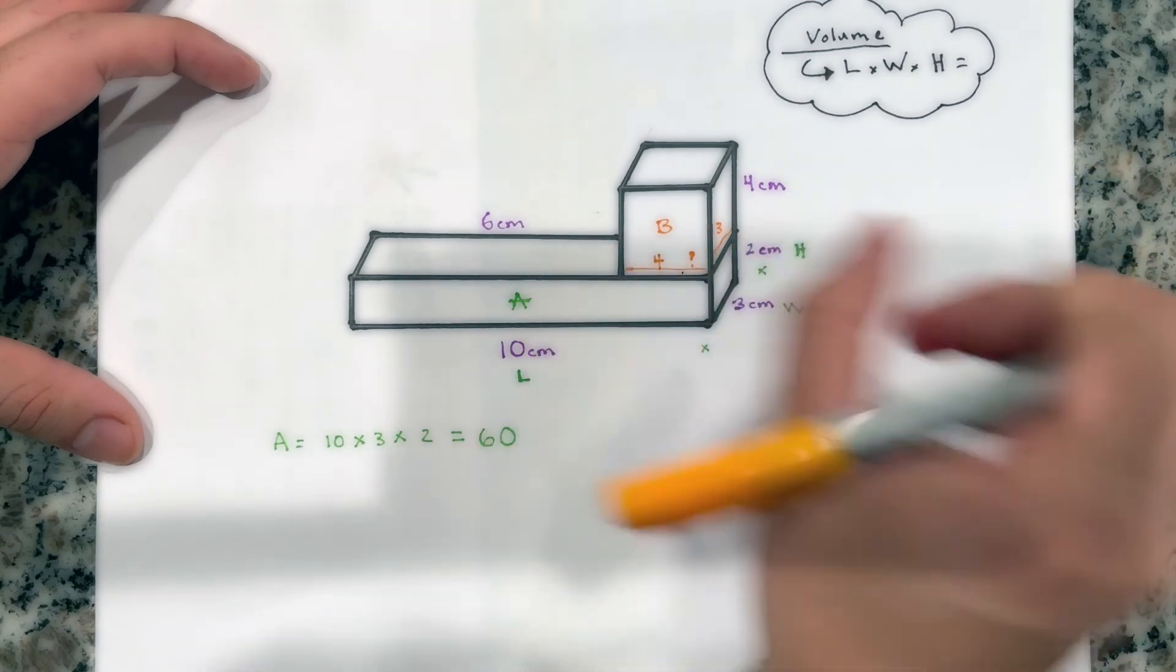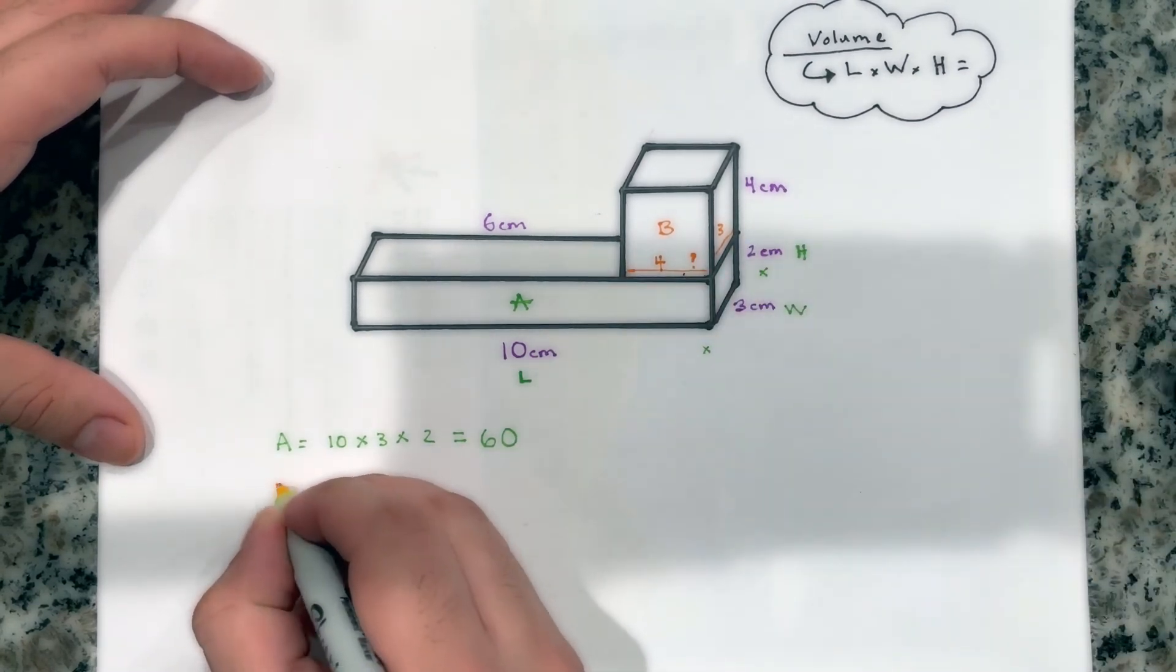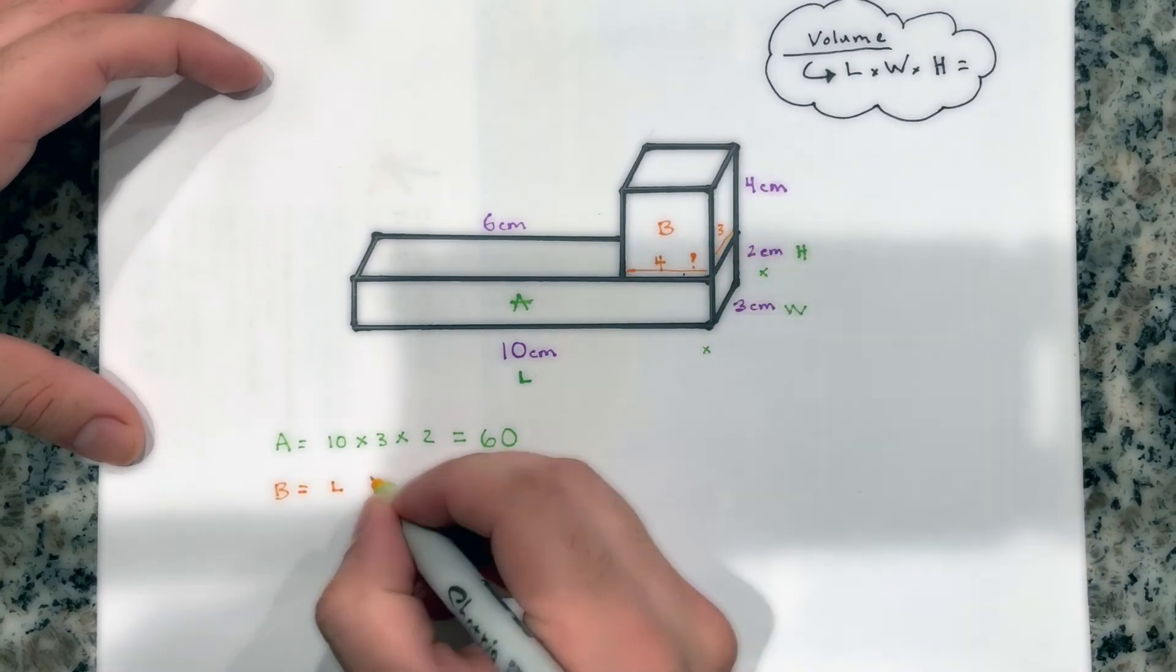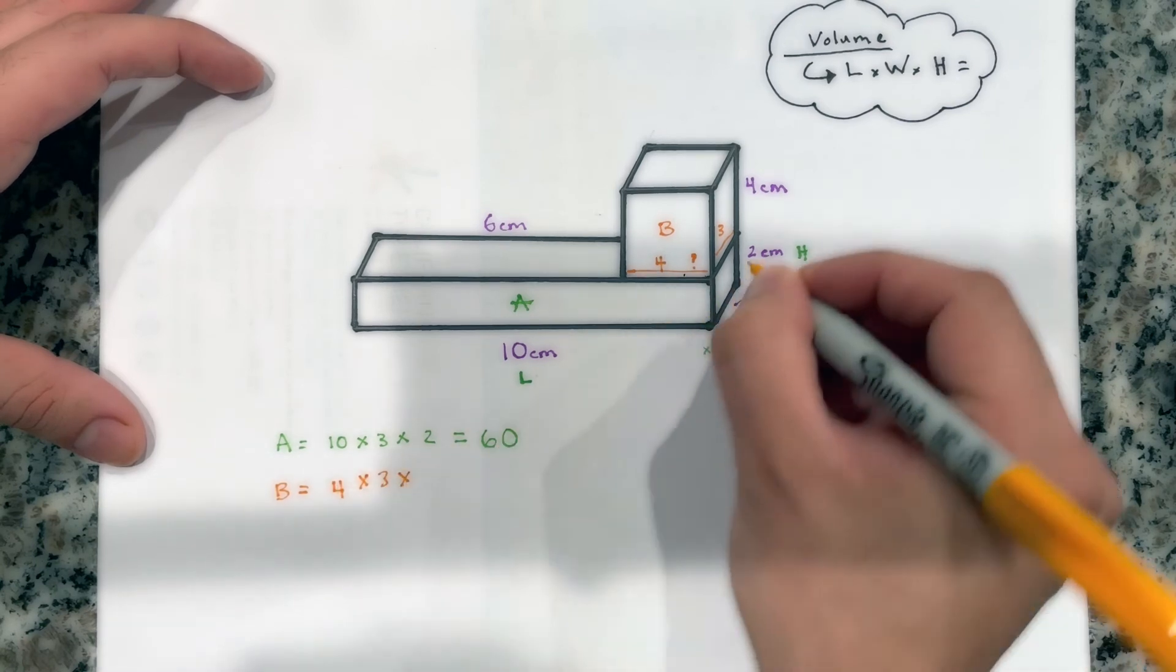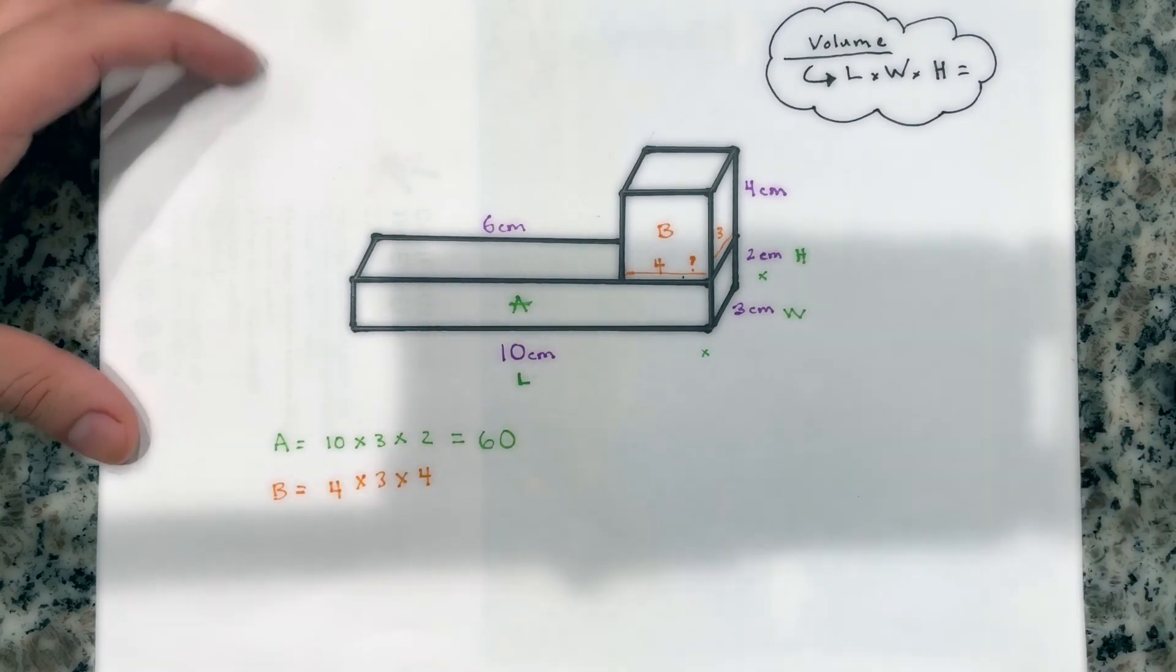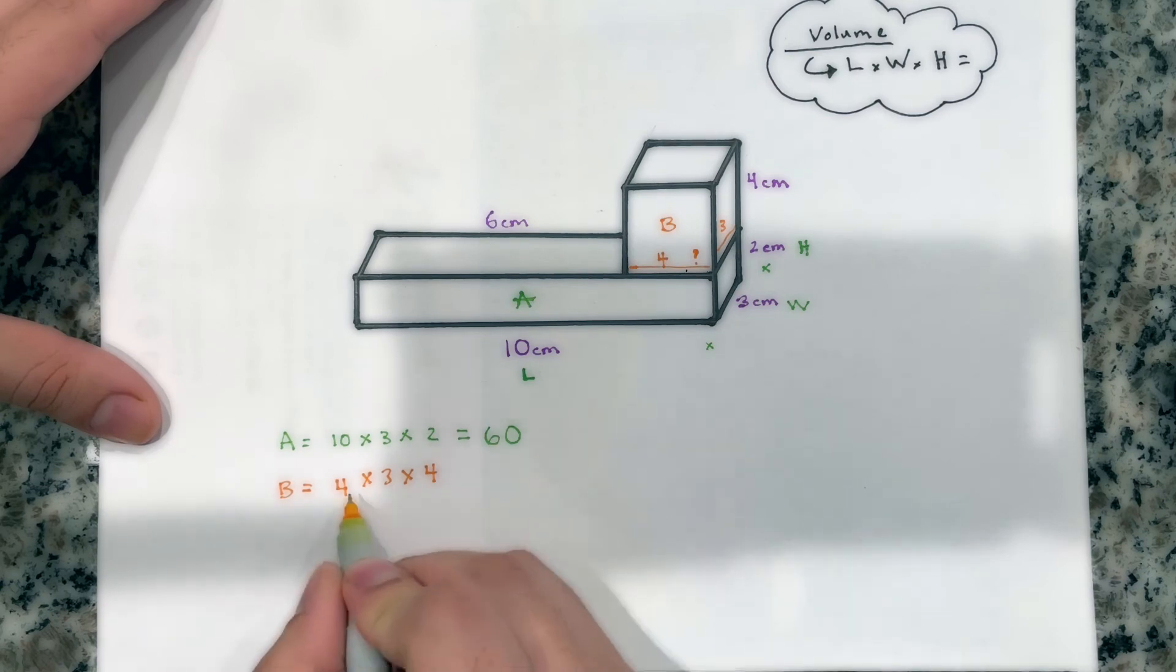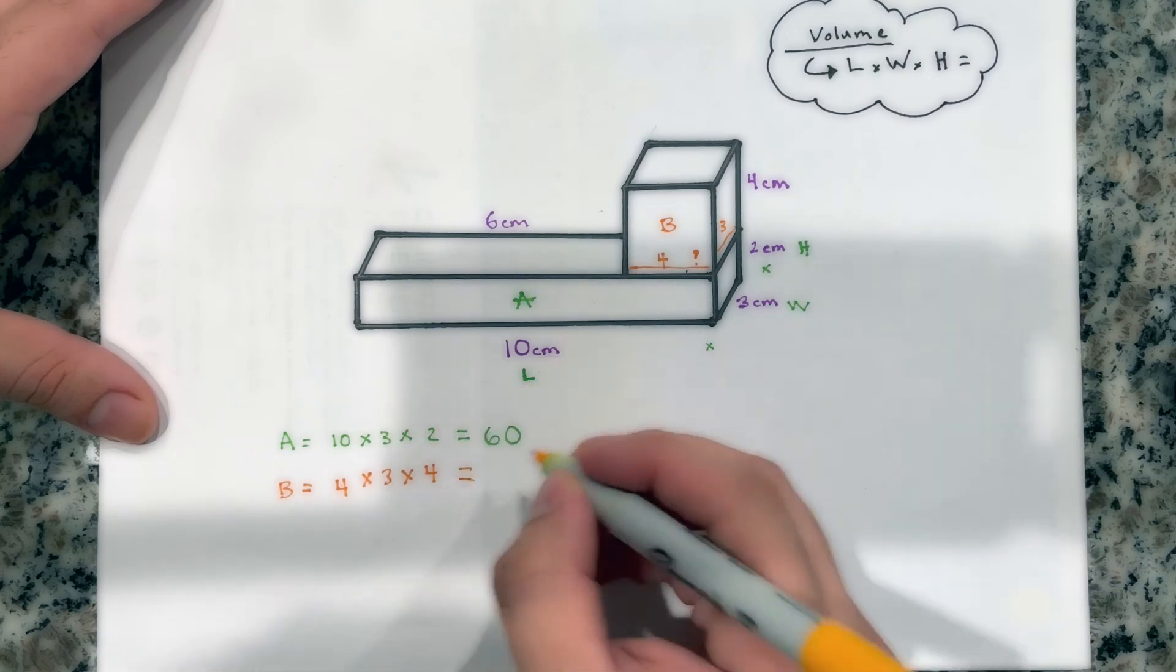So we found the length of letter B, of box B. So now let's multiply them up. 4 times 3 is 12. 12 times 4 is 48.